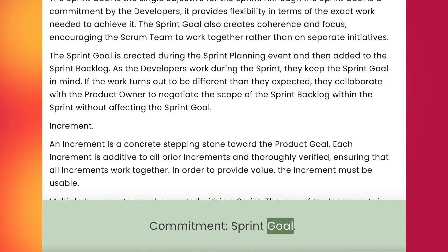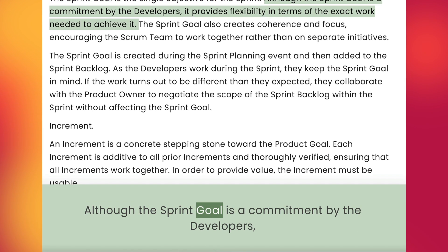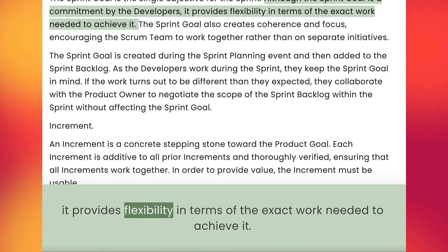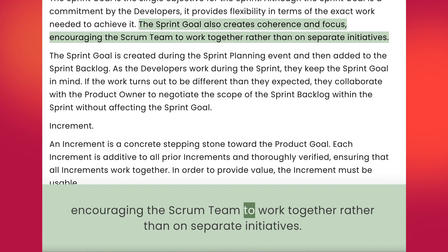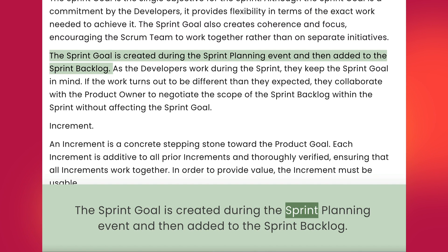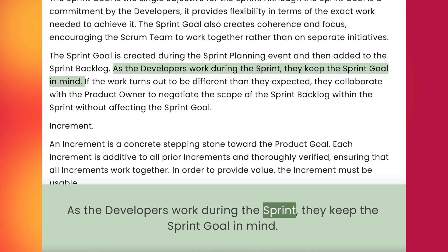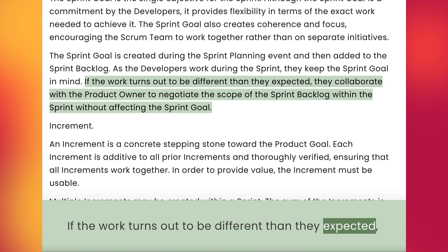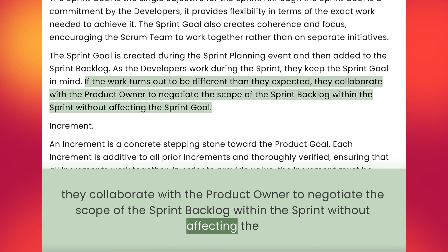Commitment: Sprint Goal. The sprint goal is the single objective for the sprint. Although the sprint goal is a commitment by the developers, it provides flexibility in terms of the exact work needed to achieve it. The sprint goal also creates coherence and focus, encouraging the Scrum team to work together rather than on separate initiatives. The sprint goal is created during the sprint planning event and then added to the sprint backlog. As the developers work during the sprint, they keep the sprint goal in mind. If the work turns out to be different than expected, they collaborate with the product owner to negotiate the scope of the sprint backlog within the sprint without affecting the sprint goal.